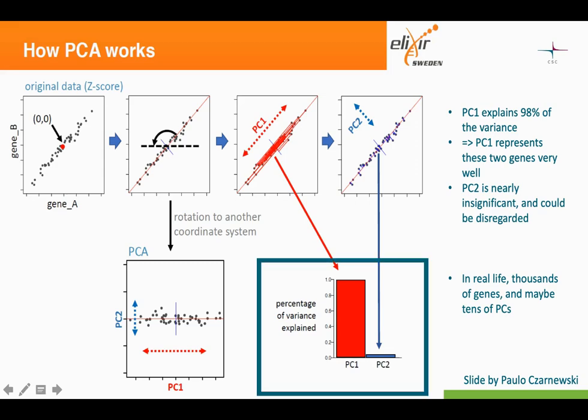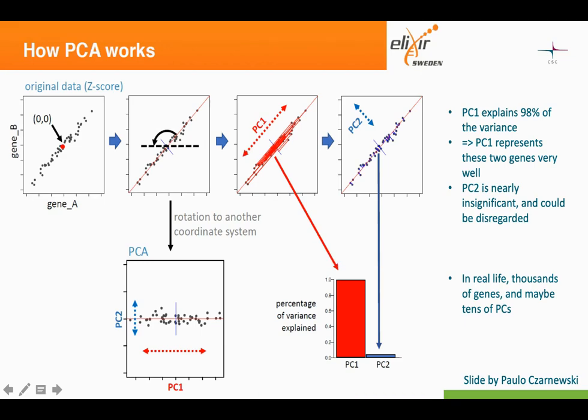You can also see that principal component 1 is explaining up to 98% of the variance, and principal component 2 is nearly insignificant, explaining only a small percentage of the variance. So it can be said that principal component 1 represents these two genes very well and PC2 can be discarded. In that sense, we go from two dimensions into one dimension. In real life, there are thousands of genes and maybe tens of principal components.